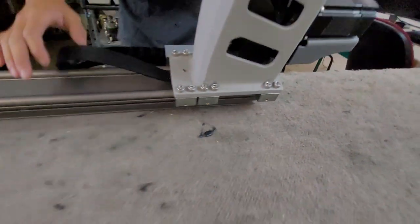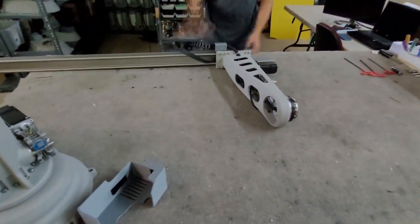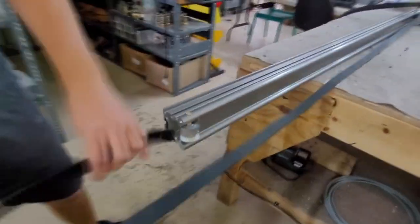With the proximal arm on halfway, we can now feed the belt through the length of the Z-rail. Make sure that the belt does not get twisted around inside of the rail.